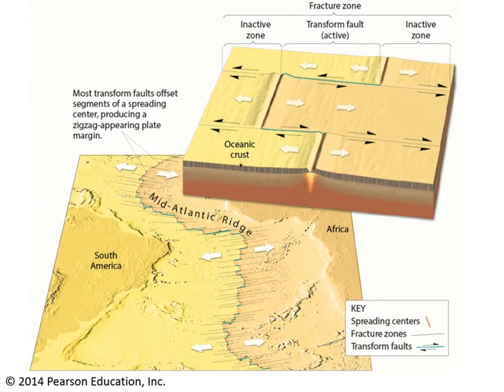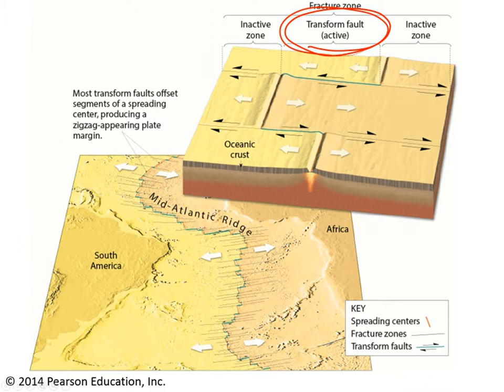If we add some labels to that figure, we would see something like the upper right of this image. These are called transform faults when they're active — when the two plates are actively scraping against one another. Once the new oceanic crust, say of the African plate generated at the ridge, clears the next segment of ridge, then the two parts of the plate are carried along at the same rate of speed in the same direction, and then we just call it a fracture zone.